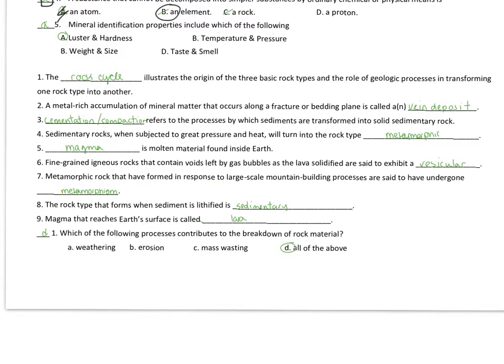Metamorphic rocks that have formed in response to large-scale mountain-building processes are said to have undergone regional metamorphism. The rock type that forms when sediment is lithified is sedimentary rock. Magma that reaches earth's surface is called lava.